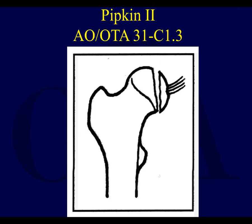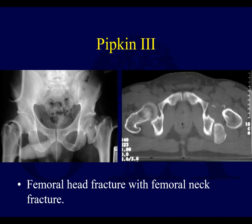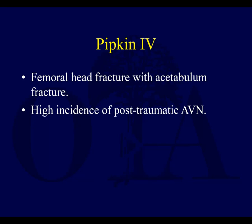Pipkin 2 is a fracture that extends above the fovea — remember the fovea is where the ligamentum teres attaches. Infrafoveal is Pipkin 1; above the fovea is Pipkin 2, typically a much bigger fragment. Pipkin 3 is a femoral head fracture with a femoral neck fracture — uncommon but it can happen. Pipkin 4 is a femoral head fracture with an acetabulum fracture. You'll see some of these occasionally, typically with some type of posterior wall fracture plus femoral head injury.